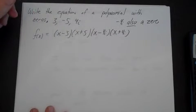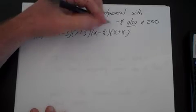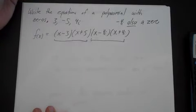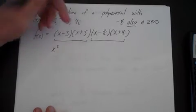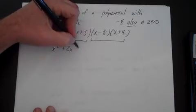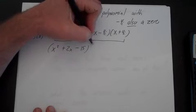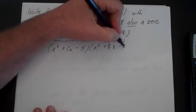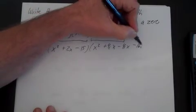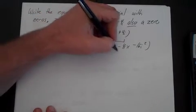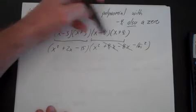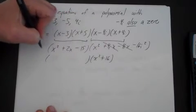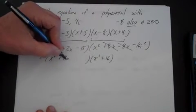To write this in standard form, we need to multiply these out. First, multiply the two imaginary binomials together: (x - 4i)(x + 4i) = x² + 4ix - 4ix - 16i². The 4ix terms cancel, and i² = -1, giving x² + 16. Also multiply (x - 3)(x + 5) = x² + 5x - 3x - 15 = x² + 2x - 15. So we have (x² + 16)(x² + 2x - 15).